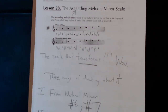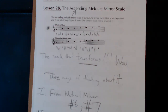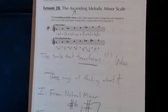The pattern for a natural minor scale — whole, half, whole, whole, half, whole, whole — we learned a couple of lessons ago. Then we learned about the harmonic minor scale last time. Now we're going to have another pattern, and that will be whole, half, whole, whole, whole, whole, half. Four whole steps in a row.